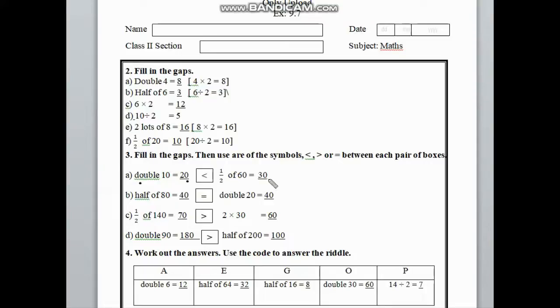If we divide, we get 30. So on the left side is 20, and on the right side is 30. So 20 is less than 30.